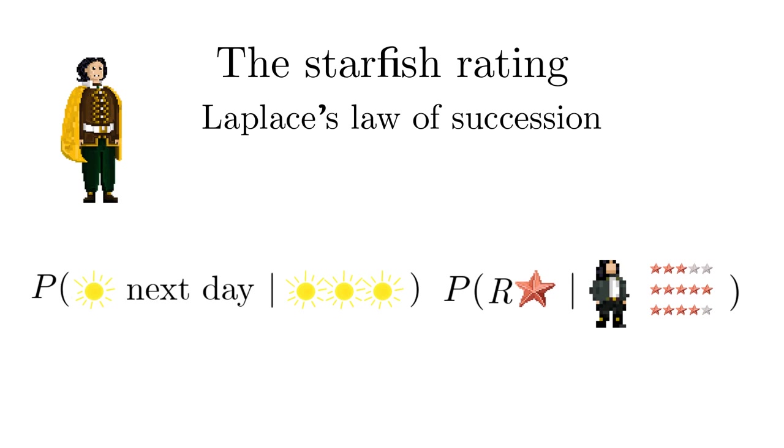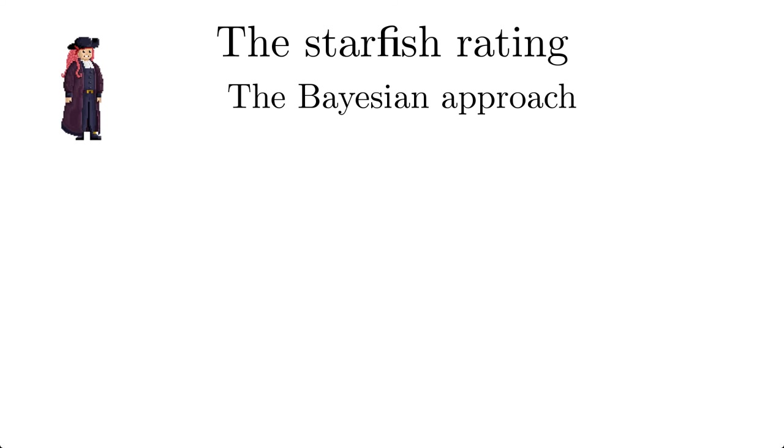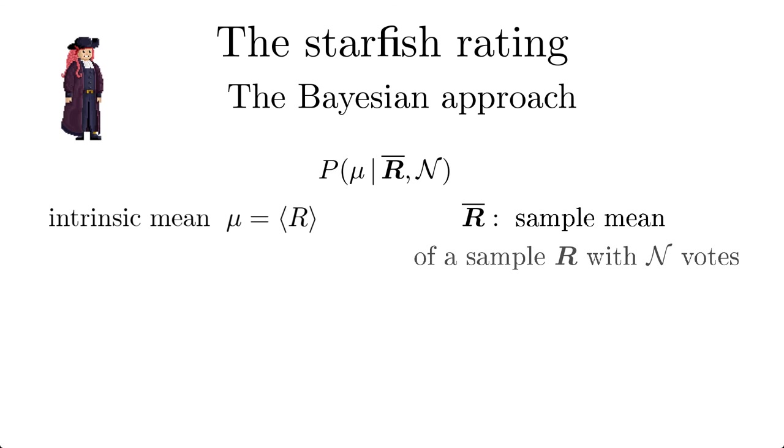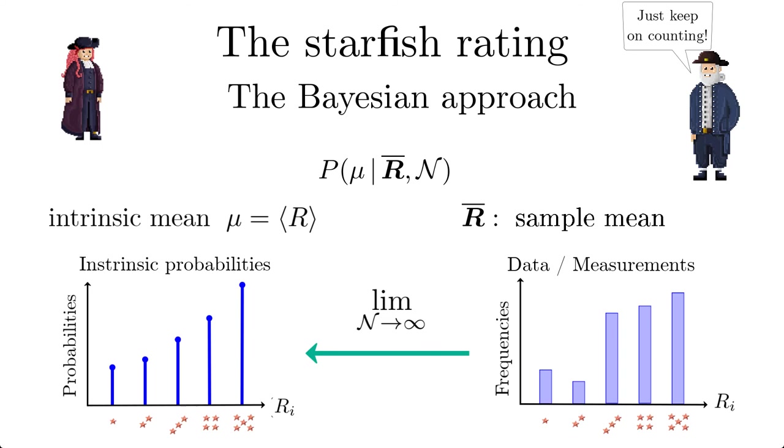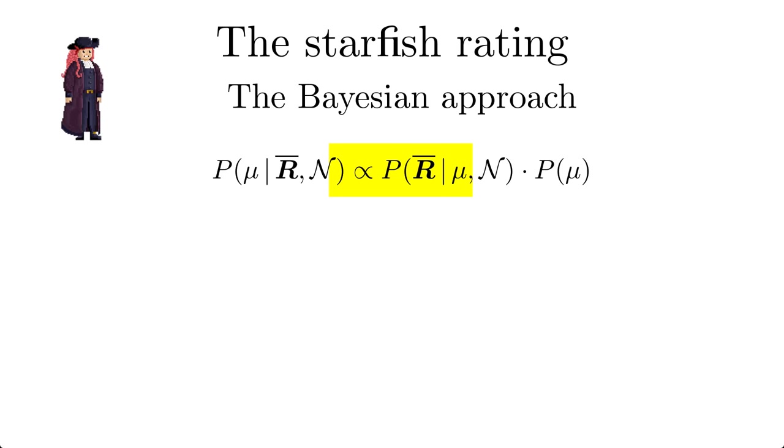Now we turn to the correct Bayesian approach for the starfish rating. We are interested in the probability for the true or intrinsic rating mu R, given the mean rating and the number of votes. The true rating is what you would get with an infinite number of votes. The first step is to invoke Bayes' theorem, to express the posterior in terms of likelihood and prior.